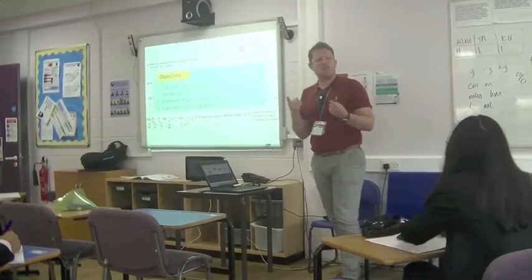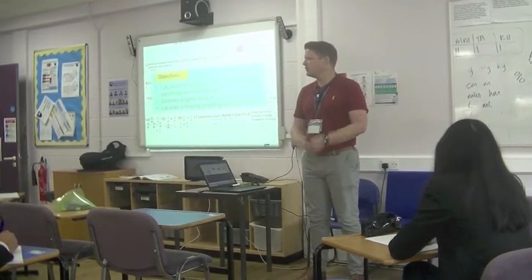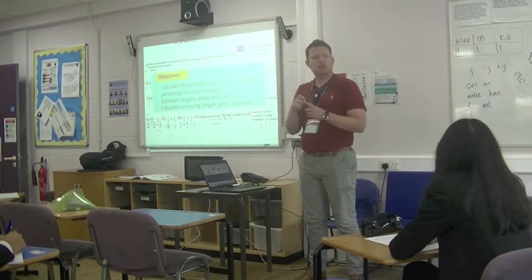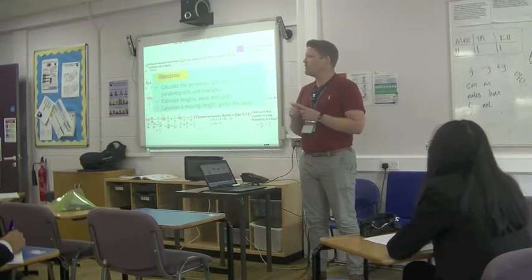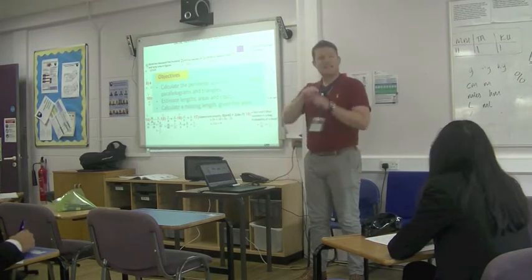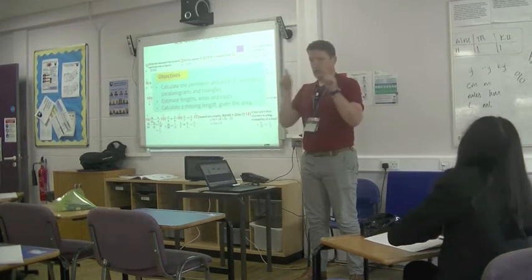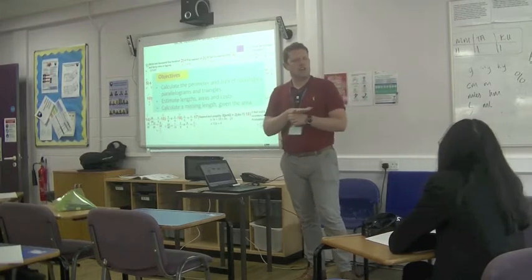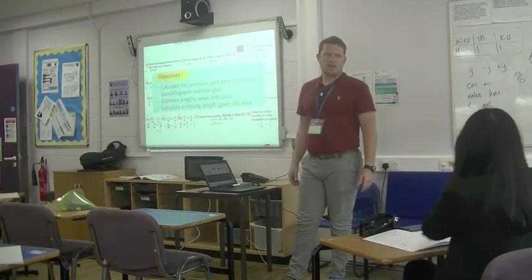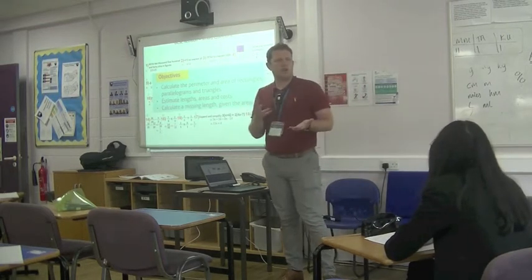Someone tell me the difference between area and perimeter. What's the difference? Tell me what the perimeter is. It is the outside length. Outside of the shape. Outside of the shape. What's the area? The area is when you times length and width together. Of what though? The area of what?